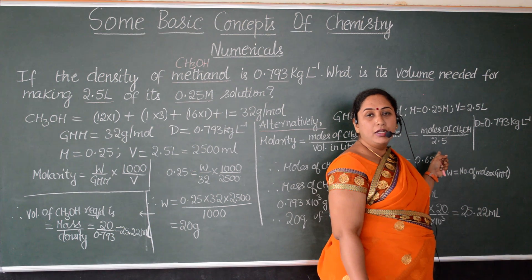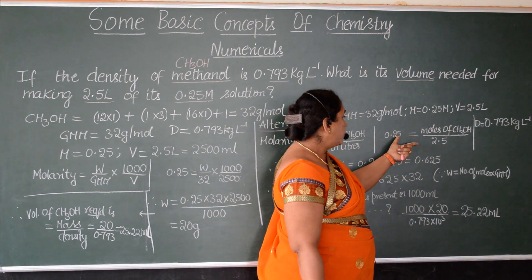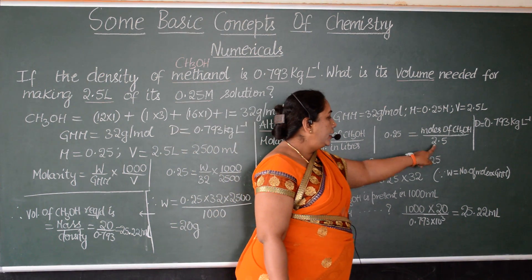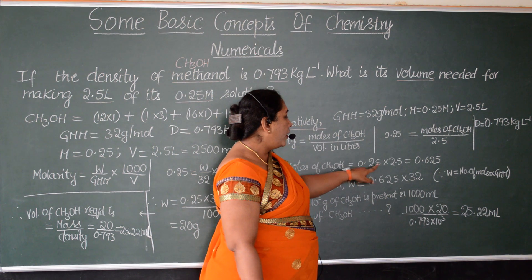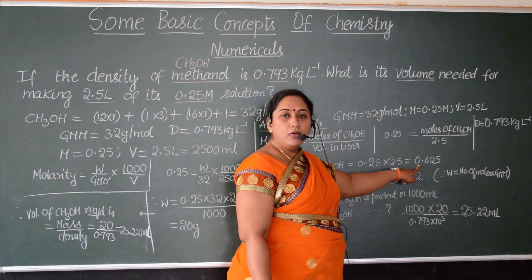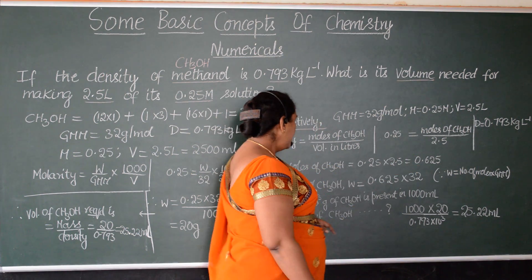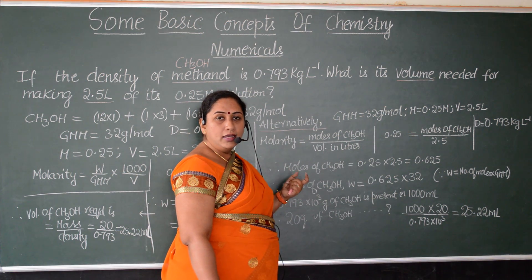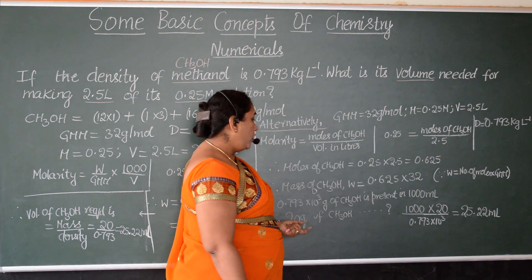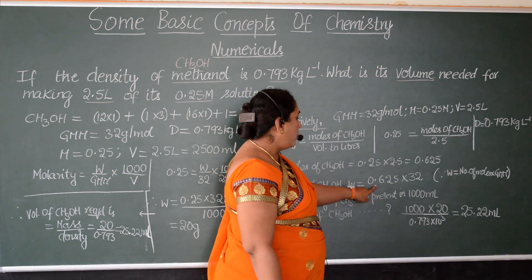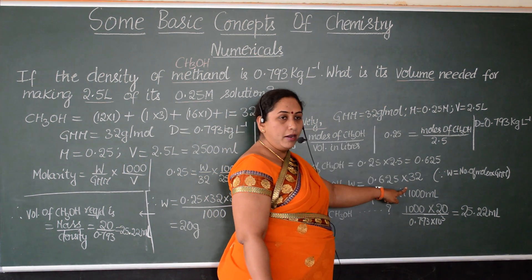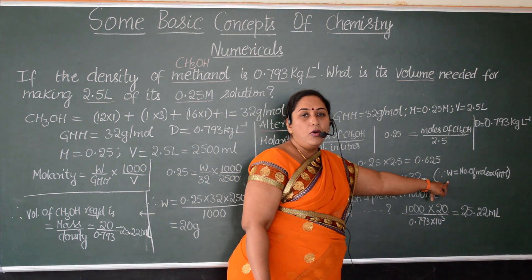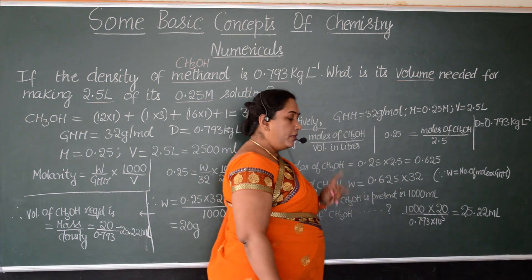Now, it is easy for us to find out the number of moles of methanol by using this formula. Therefore, number of moles of methanol will be equal to molarity into volume, that is 0.25 into 2.5, that gives the value as 0.625. Next, let us find out the W for methanol, that is given mass for methanol. So, W will be equal to 0.625 into gram molecular mass. Number of moles into gram molecular mass will be the value of W, that is the given mass.